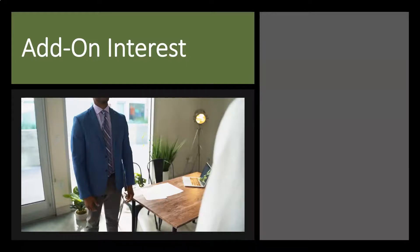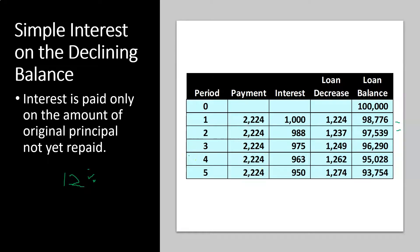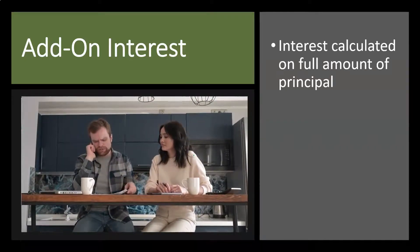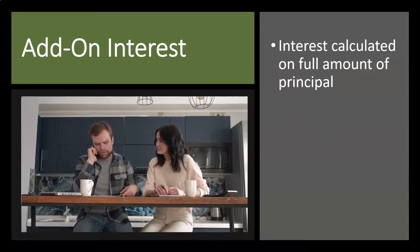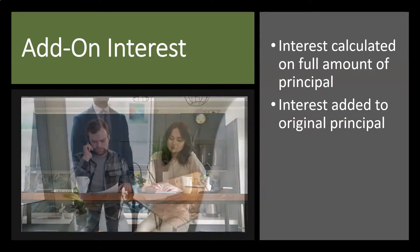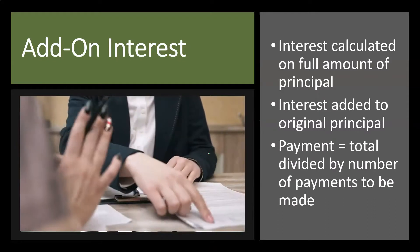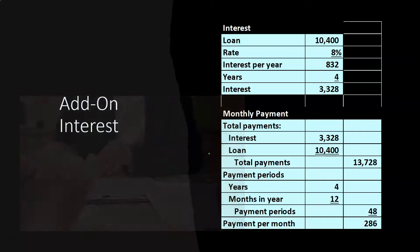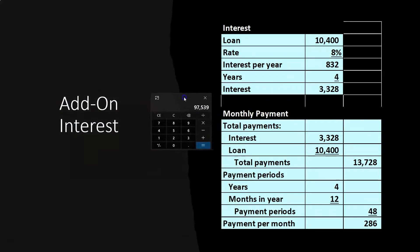Then we have add-on interest. This is actually an easier method to calculate in some ways, but it's not really the standard type of installment loan we typically see. If you were to see a loan structured this way, it's a little more difficult to compare it to a standard loan structure, even though it's easier to calculate. We have some practice problems to help you make that comparison. Anytime there's a variant from the standard, the question is: how can I standardize these things so I'm comparing apples to apples?